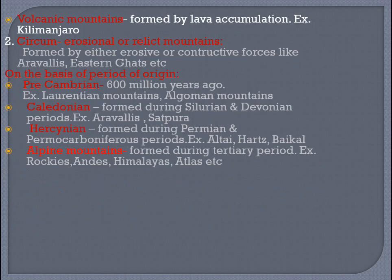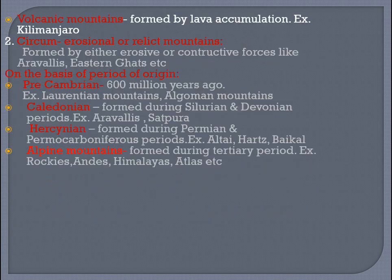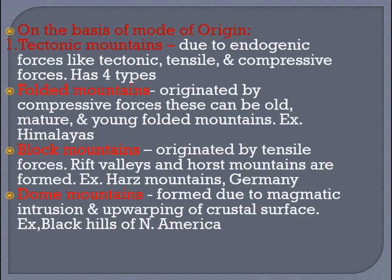Tectonic mountains are formed due to endogenic forces like tectonic and compressive forces. They have four types. Folded mountains are originated by compressive forces, and they can be old folded mountains, mature folded mountains, or young folded mountains.